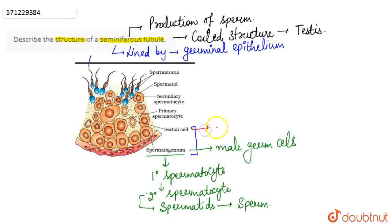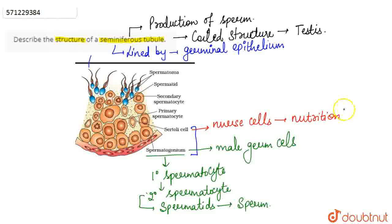Now if we talk about the Sertoli cells, these are cells that are also called the nurse cells. Why are they called nurse cells? Because they provide nutrition to the germ cells or the spermatogonium. They provide nutrition to the sperm cells or to the spermatogonial cells so that they can form the male gamete or the sperm.